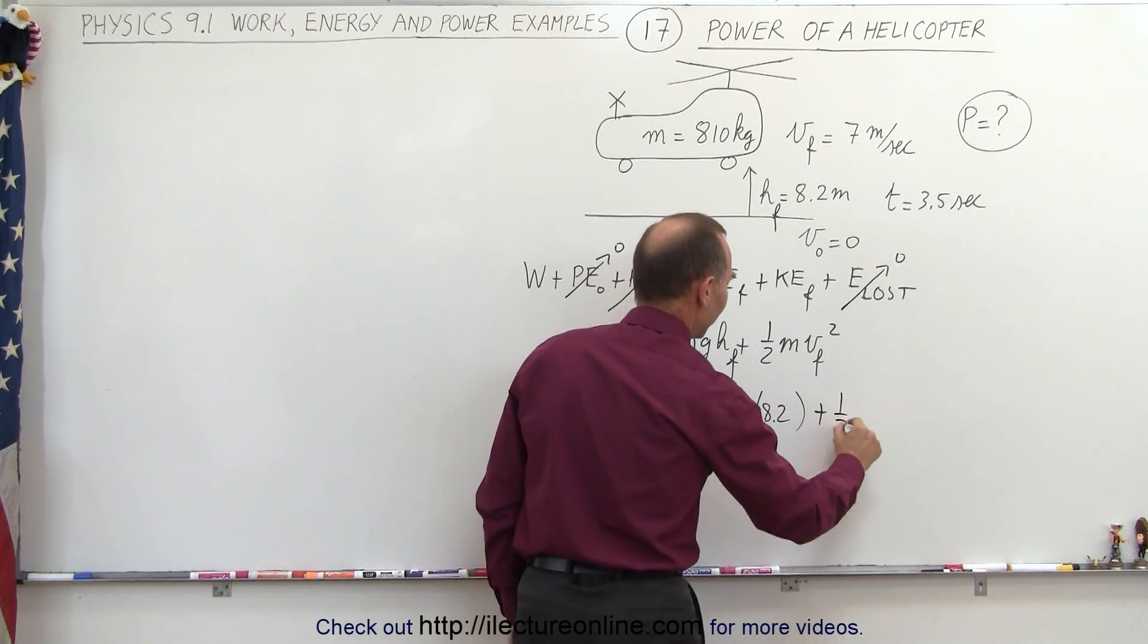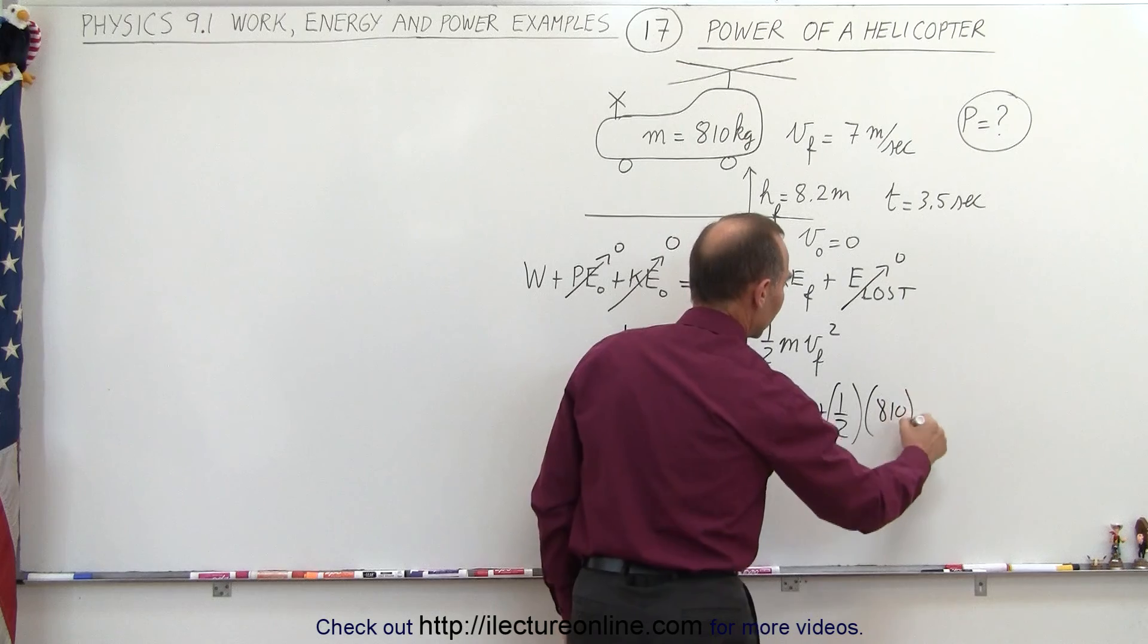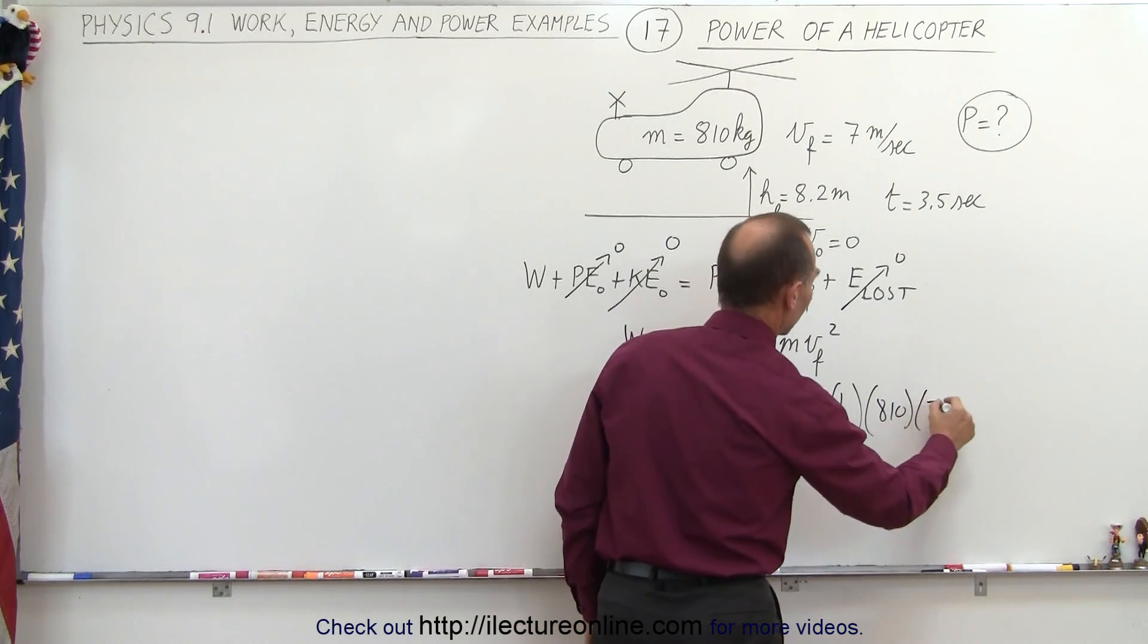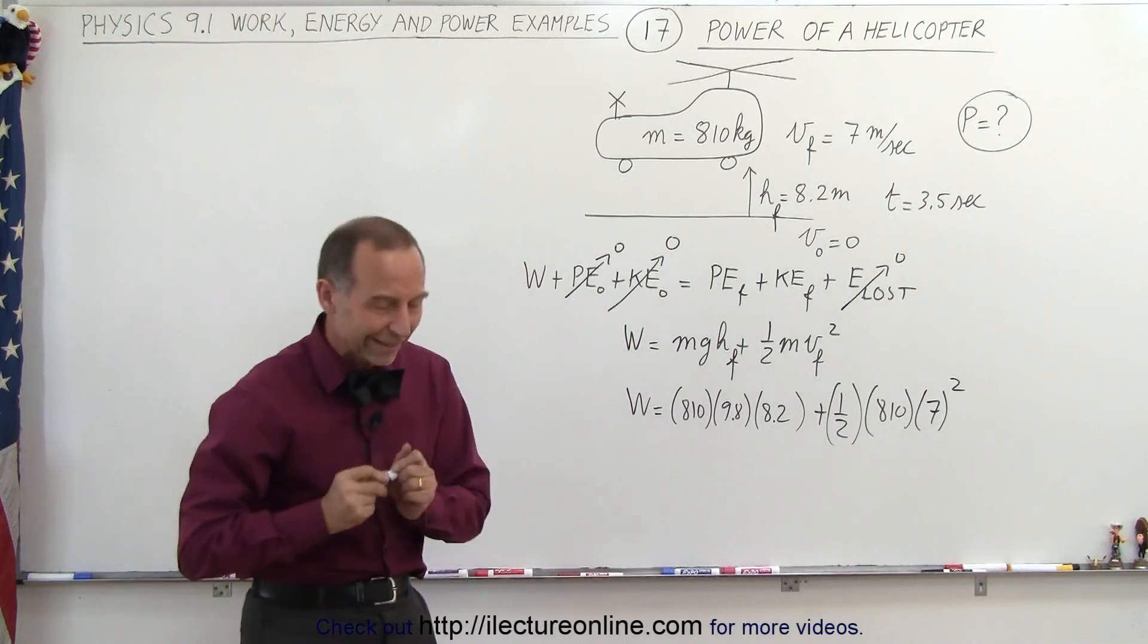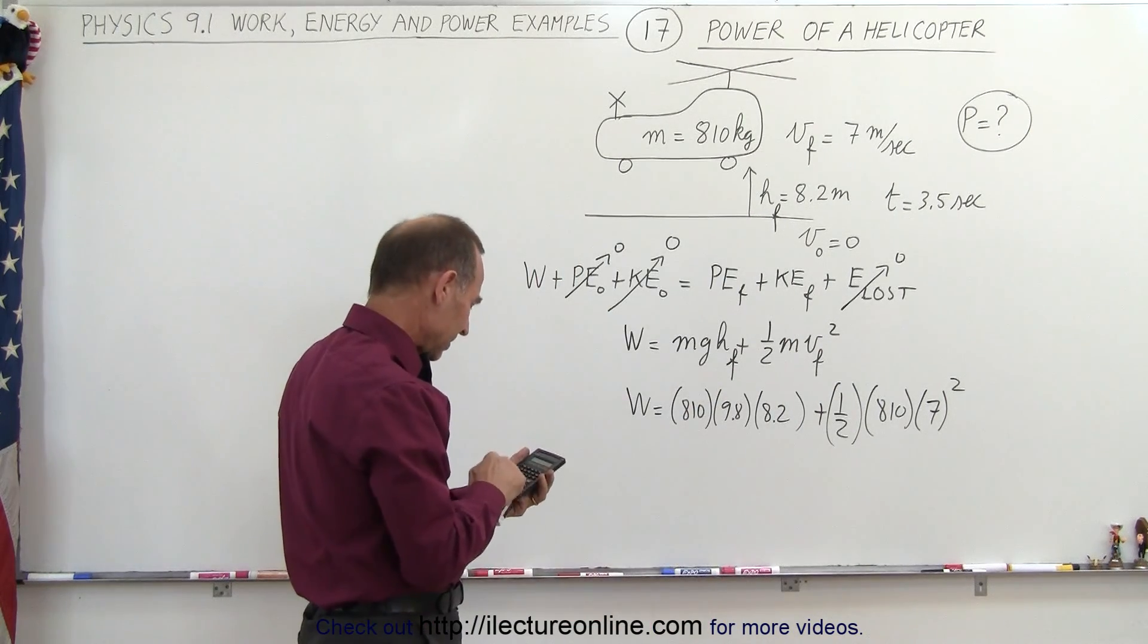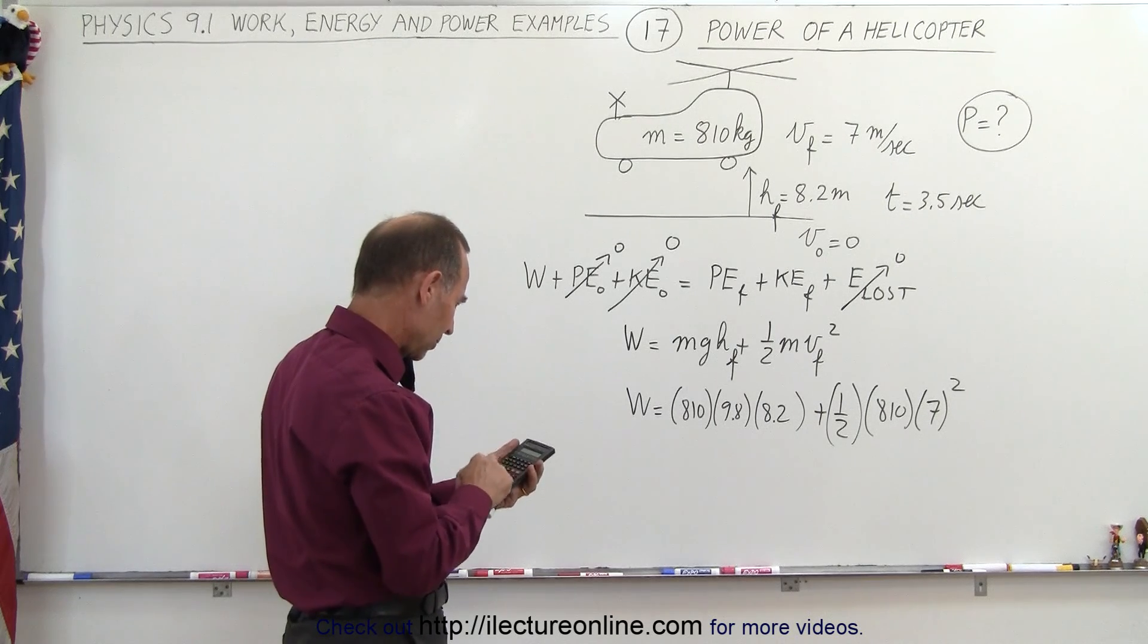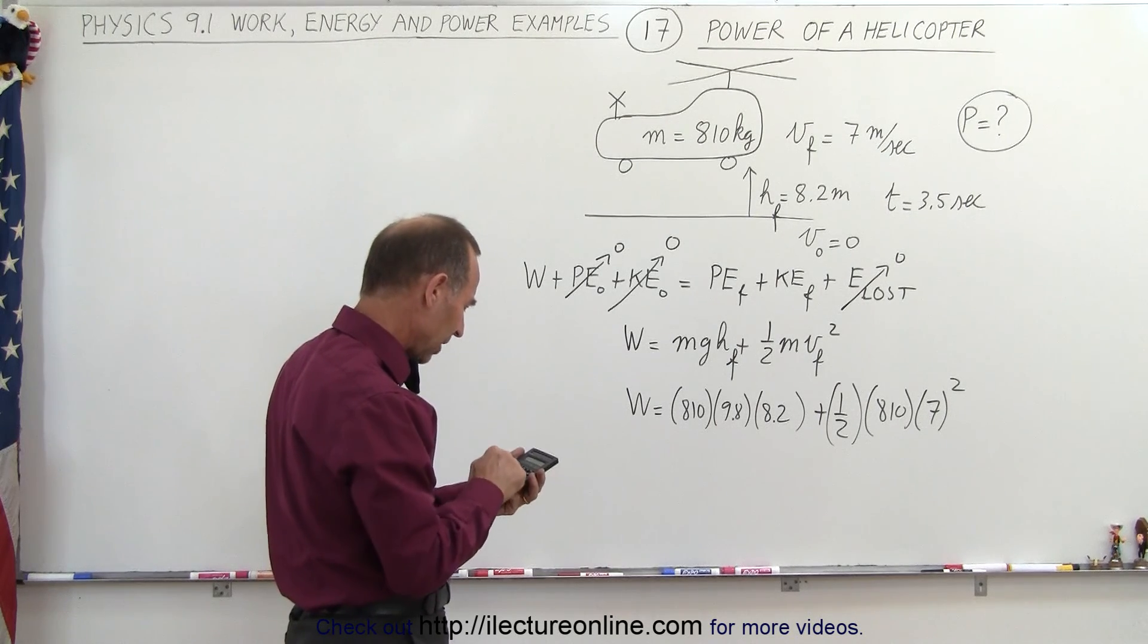Plus one-half times the mass, which is 810, times v squared, which is 7 squared. That would be the increase in kinetic energy, so we have 810 times 9.8 times 8.2. We add to that, well, let me write down what the result is, that's kind of interesting.